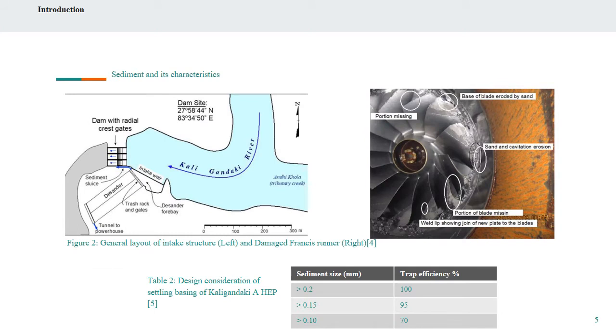For instance, the design of the settling basin of Kali Gandaki A hydropower plant is based on the criteria shown in Table 2. Despite 70% trapping efficiency for sediment size larger than 100 microns, the Francis runner has faced serious damage as shown in Figure 2.